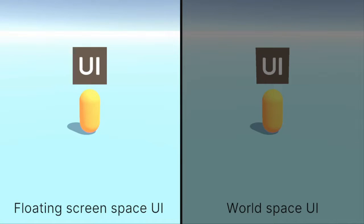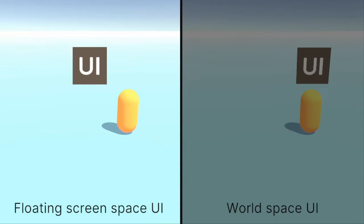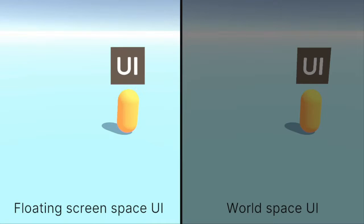FloatingScreenSpaceUI on the left lives in screenspace. During rendering, it is placed on top of the rendered 3D scene. Imagine we are watching this scene through a window and this UI is a sticker on the window. Per default, the UI will not move. This is not super useful, but we can check the capsule's position each frame and move the UI accordingly. Finally, we can add an offset in screenspace to move it up. Now it moves like the one on the right side.